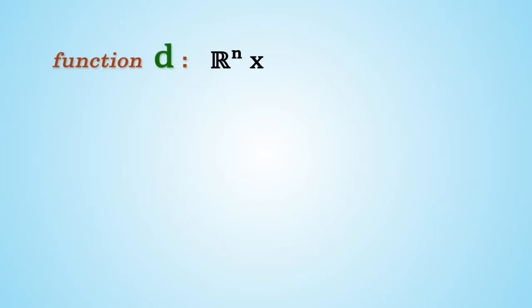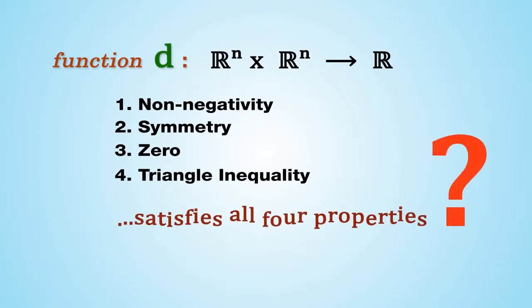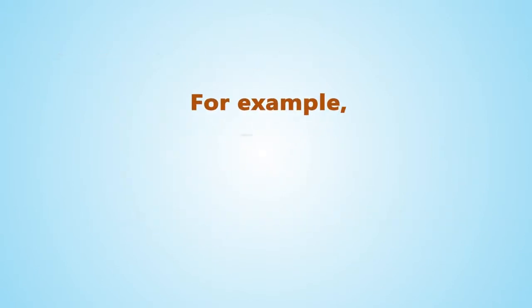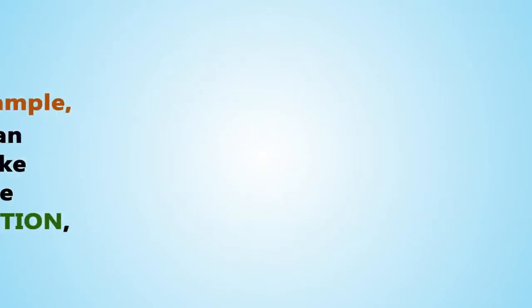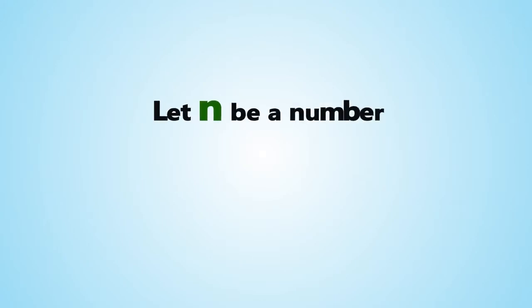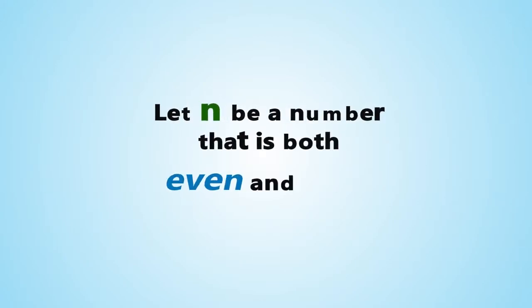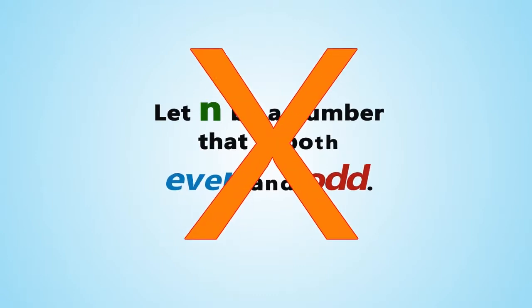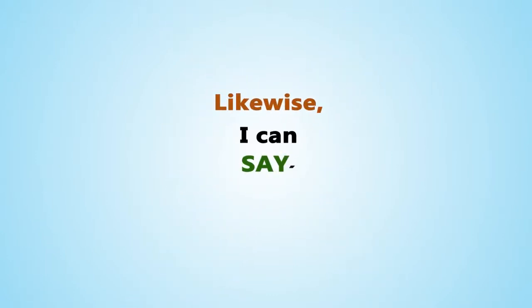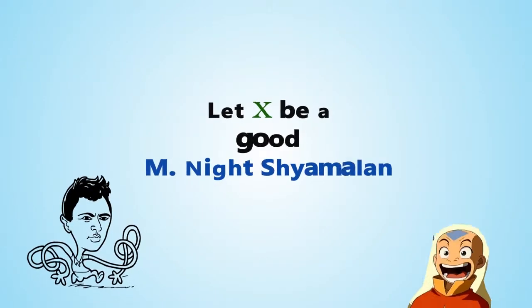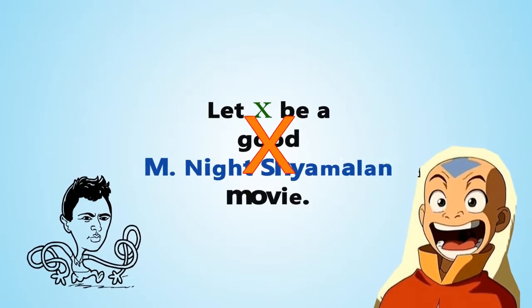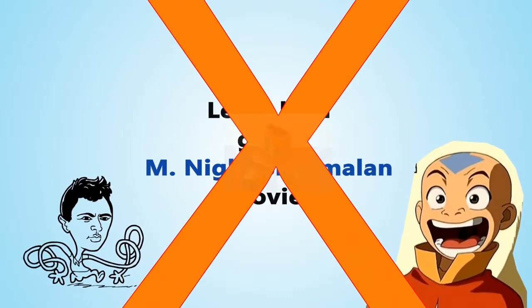How do we know that there is actually a function d that satisfies all four properties? For example, I can make the definition: let n be a number that is both even and odd. But no such n exists. Likewise, I can say let x be a good M. Night Shyamalan movie. And as we all know, there's no such x.